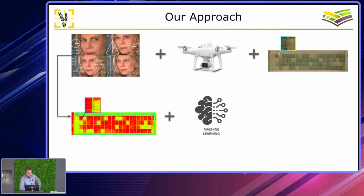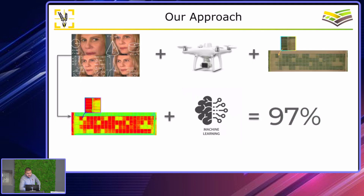We used 25 machine learning regression models to try and predict wheat yield. We achieved approximately 97% accuracy, which is really, really high. We also submitted our paper, which is currently under review in a high-ranking journal, and the reviewers said they had never seen such high accuracy. I have to say — it's 100% legitimate; we did not manipulate the data.